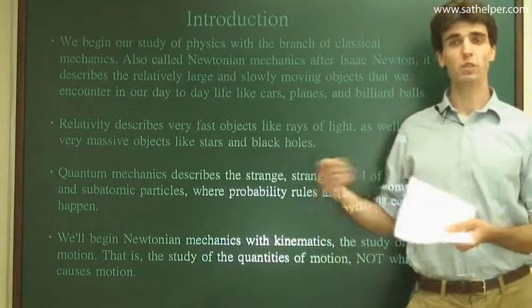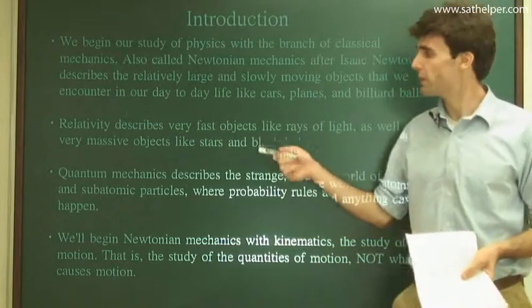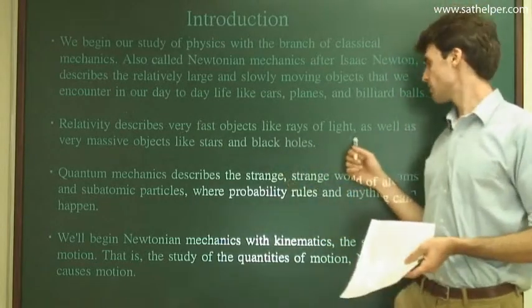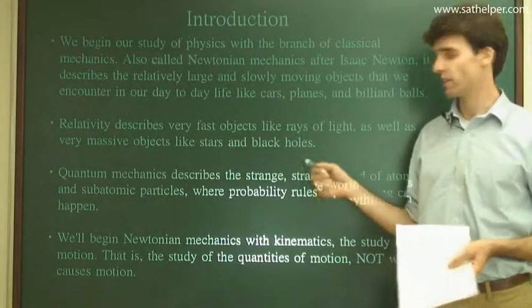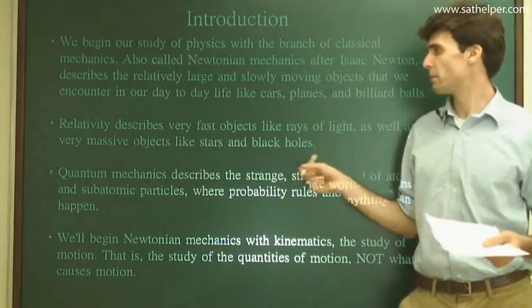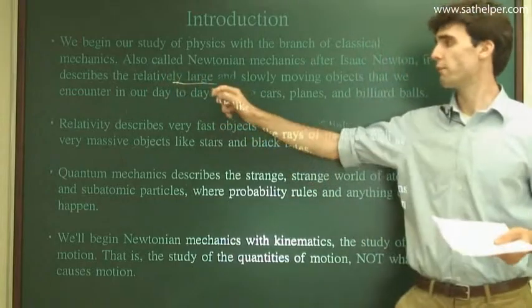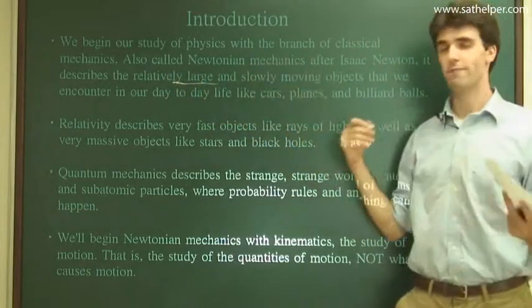Other types of physics include relativity, which describes very fast objects like rays of light as well as very massive objects like stars and black holes. This operates in the regime where you get huge things, bigger than relatively large, and things moving very fast.